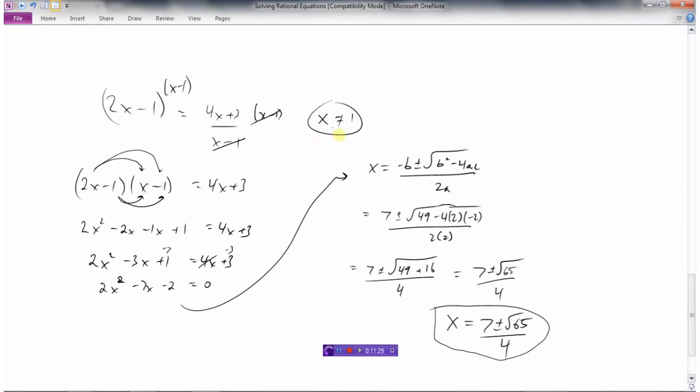First of all, find out what the non-permissible values are by looking at the denominators and seeing what x cannot be. Then we would multiply by whatever we need to to get rid of all the denominators in the expression. Solve the equation for x, and then don't forget to check your answer. That's solving rational equations.